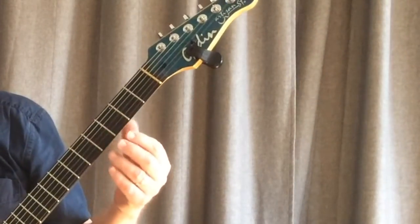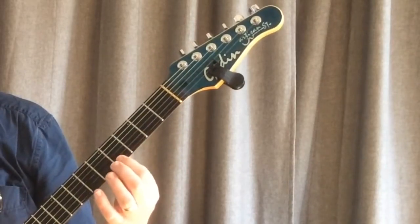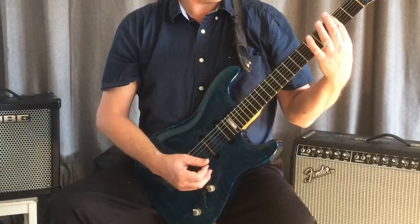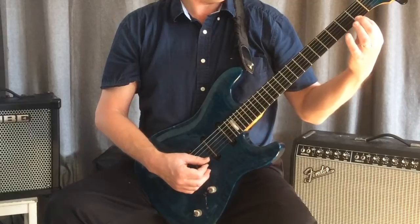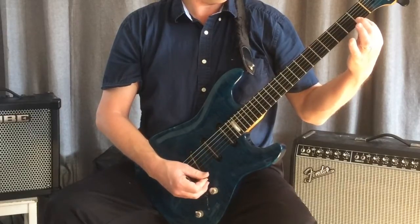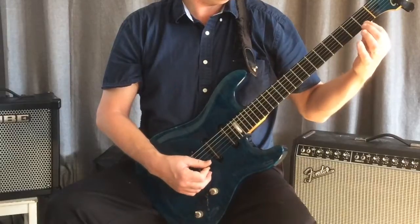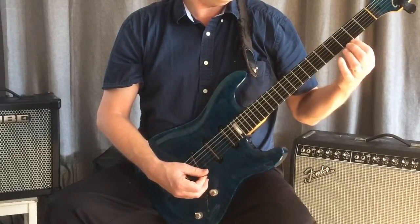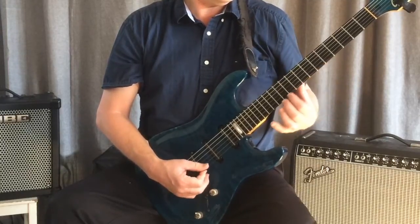On the guitar, half steps can be found from one fret to the next. A fret is the space between the fret bars. If I push down and play a note at the first fret of the guitar, then play a note at the second fret, I have played two notes a half step apart. Therefore, any two frets next to each other make notes that are a half step apart.